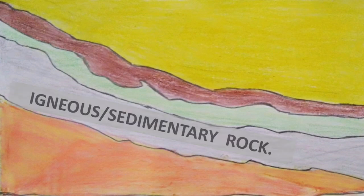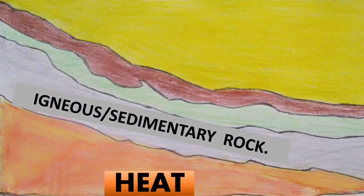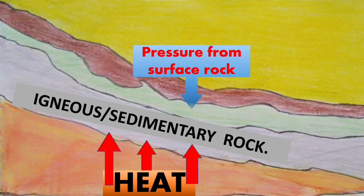The igneous or sedimentary rock gets tremendous heat and pressure from the surface rock. The mineral contents of these rocks change — that is, minerals are broken down into smaller ones or stretched into flat particles.